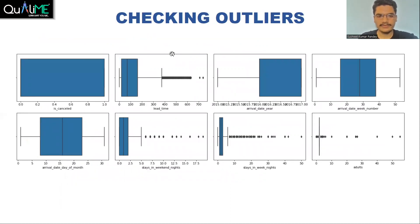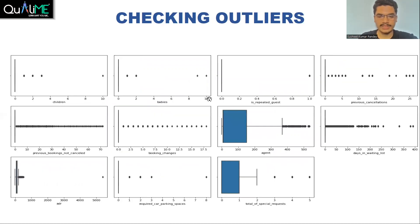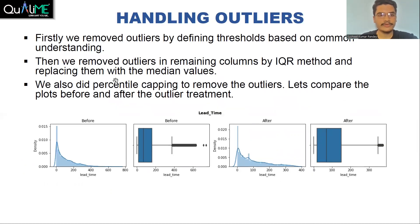After that, we started checking for outliers. Data points outside the whiskers represent outliers. We see some outliers in the lead time column, stays in weekend nights, stays in weeknights, adults, children, and babies. After checking the outliers, we started dealing with them. Firstly, we removed outliers in some discrete columns like children, babies, and adults by defining some thresholds.